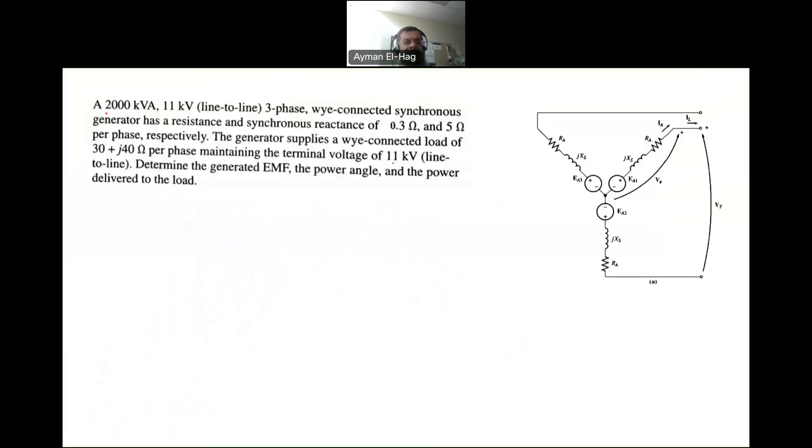This is a 2000 kVA, this is the rated value of the generator. This is the maximum power, or S, can be delivered by the generator to the load. 11 kV line-to-line, we're always giving the line-to-line voltage at the terminal, which is this one. The voltage line-to-line is 11 kV, so this is your terminal voltage.